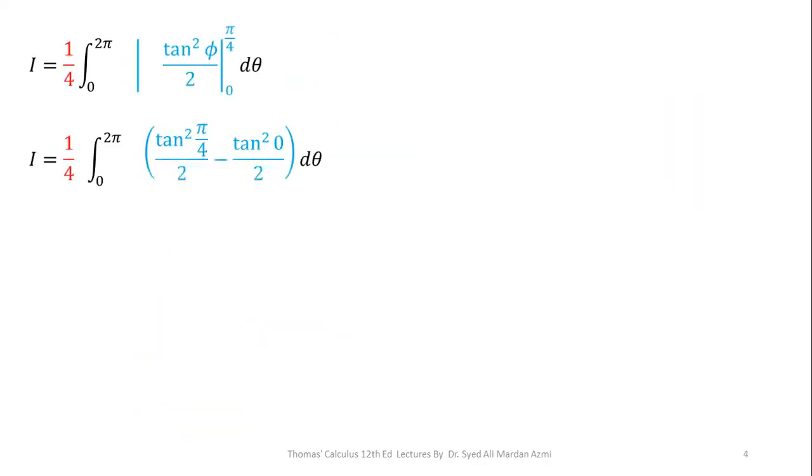In the next step, we will apply the limits, upper limits minus lower limit. Substituting the values, I have tan pi by 4 is equal to 1 and tan of 0 equal to 0. So I get 1 by 2. This 1 by 2 will go outside and this 1 by 4 become 1 by 8. And the integration of d theta for the limit 0 to 2 pi will be theta.